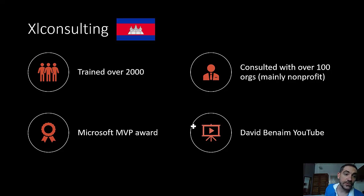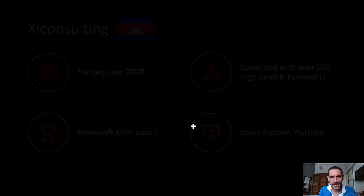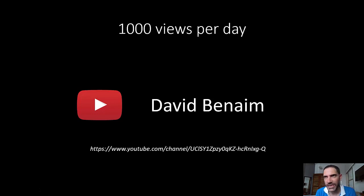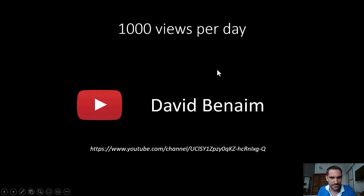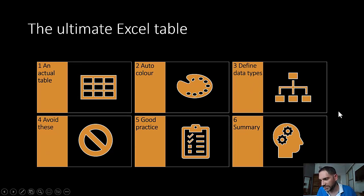My name is David Beno and I run Excel Consulting. We've done corporate training in Excel for over 2,000 people and consulted with over 100 organizations. I've been an MVP for the last two and a half years, and I have a YouTube channel getting just over a thousand views per day with seven and a half thousand subscribers. I release weekly videos on general business technology. There are six components to this session: setting up a table, auto color, defining data types, things to avoid, good practice, and a summary.